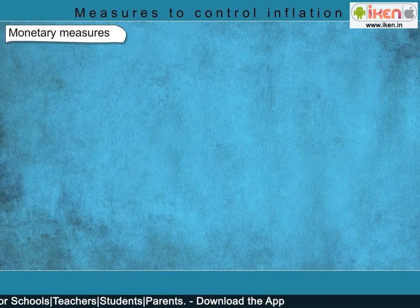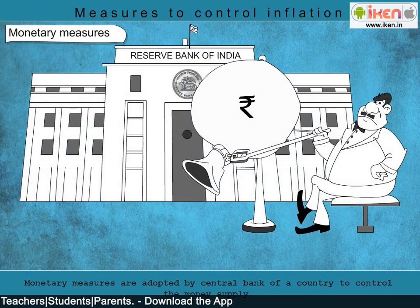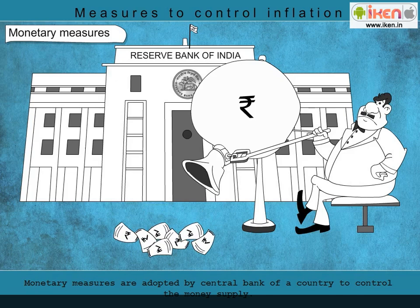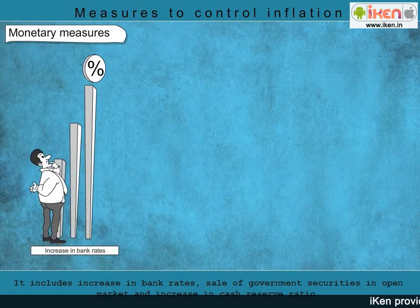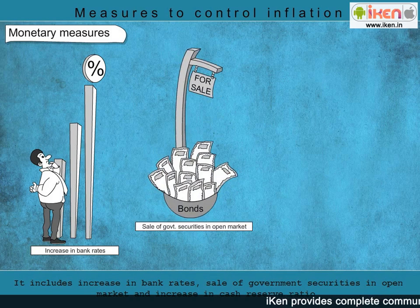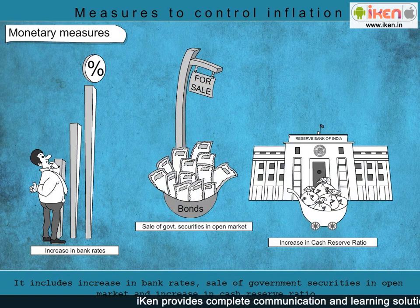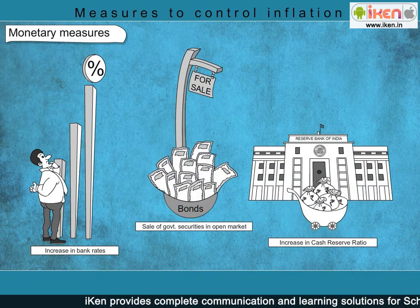Monetary measures are adopted by the Central Bank of a country — the Reserve Bank of India in the case of India — to control the money supply. These include increase in bank rates, sale of government securities in the open market, and increase in cash reserve ratio.